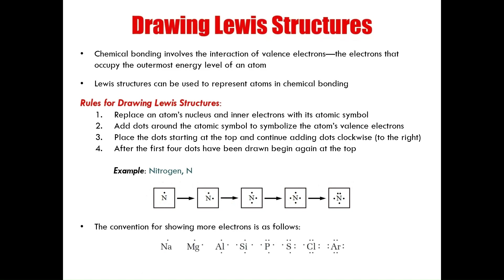The convention for showing more electrons is as follows. Here I have period three elements written out as they would be on the periodic table from left to right. I start with sodium and go all the way to argon. Each of these elements has its respective amount of valence electrons based on the group those elements are in.